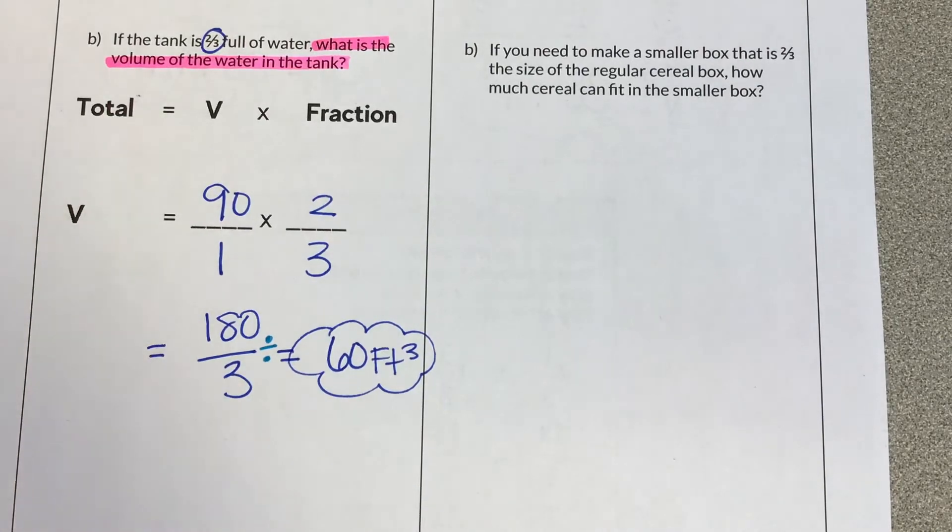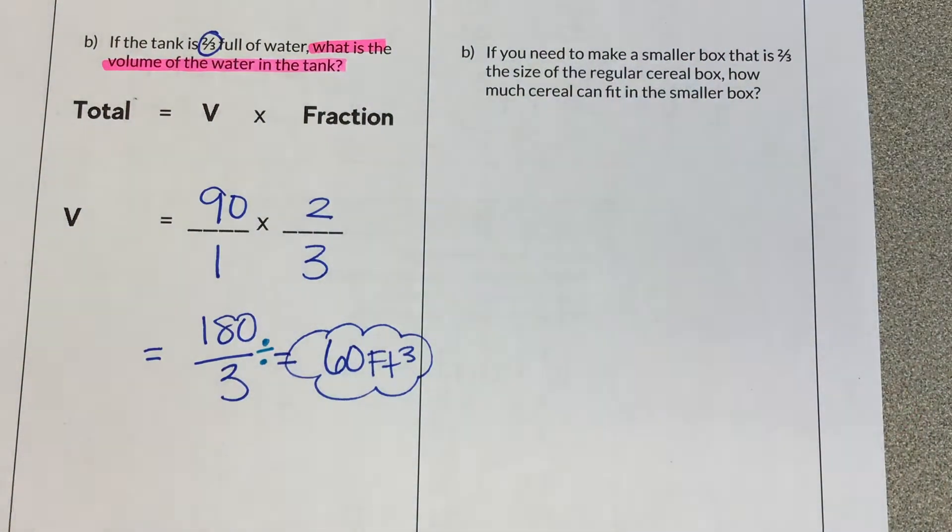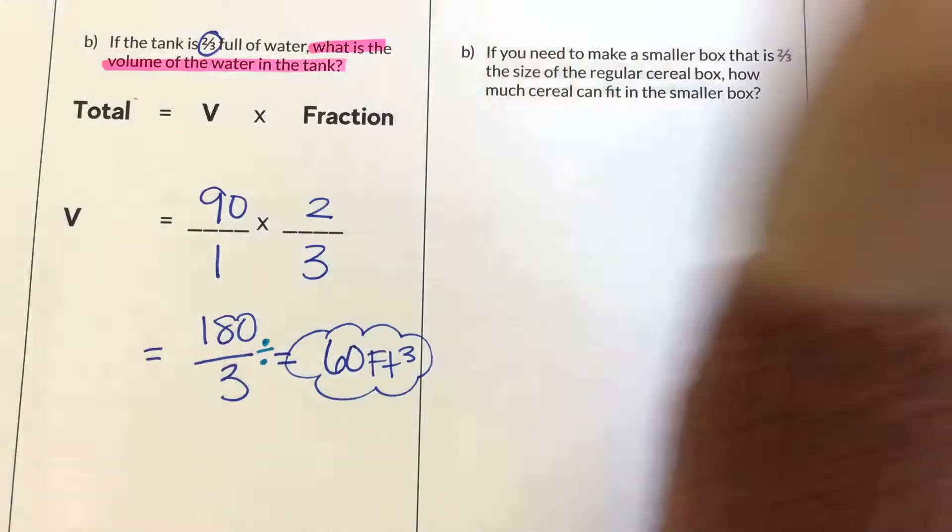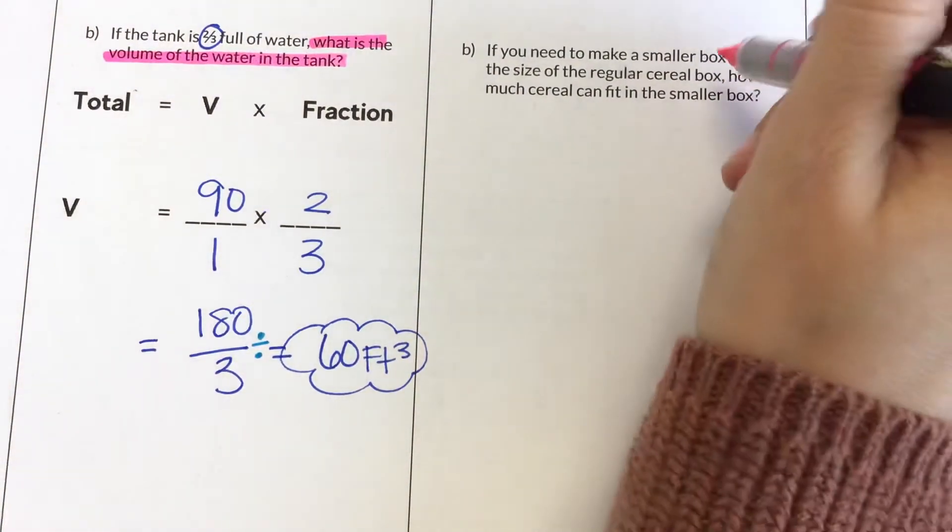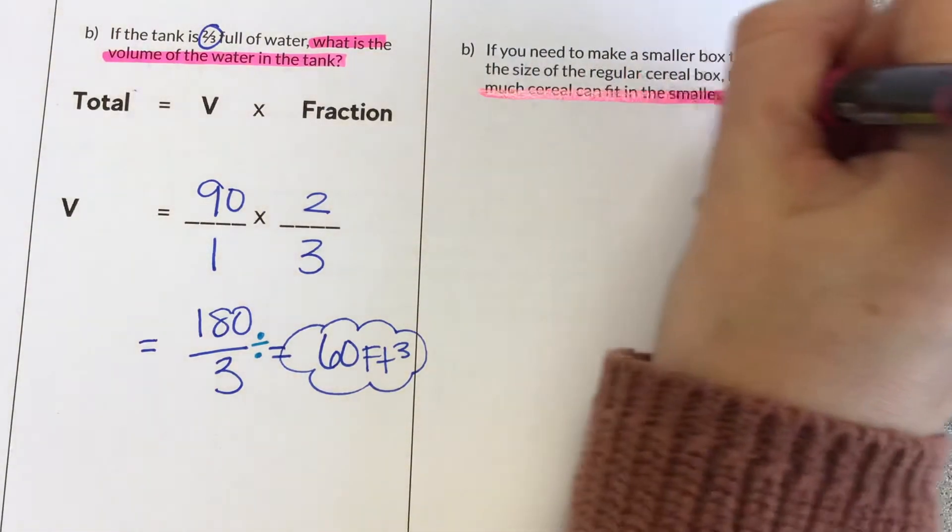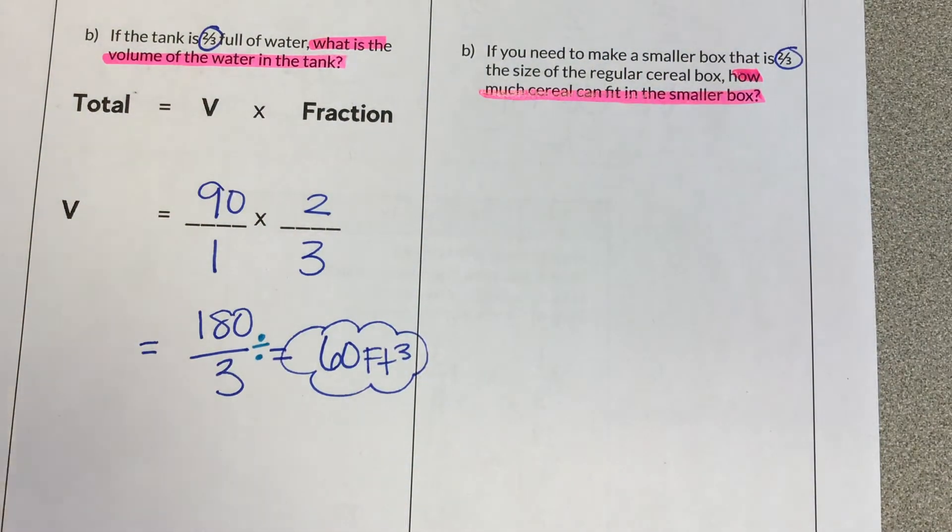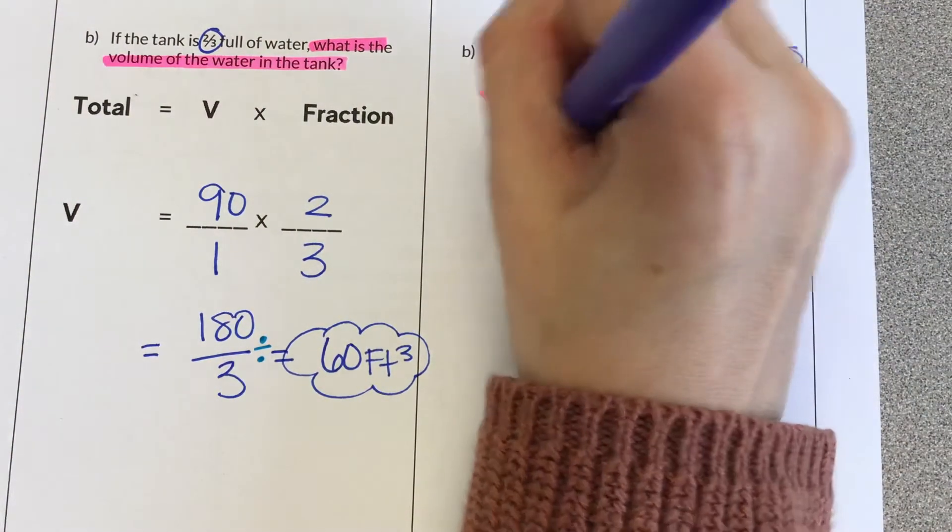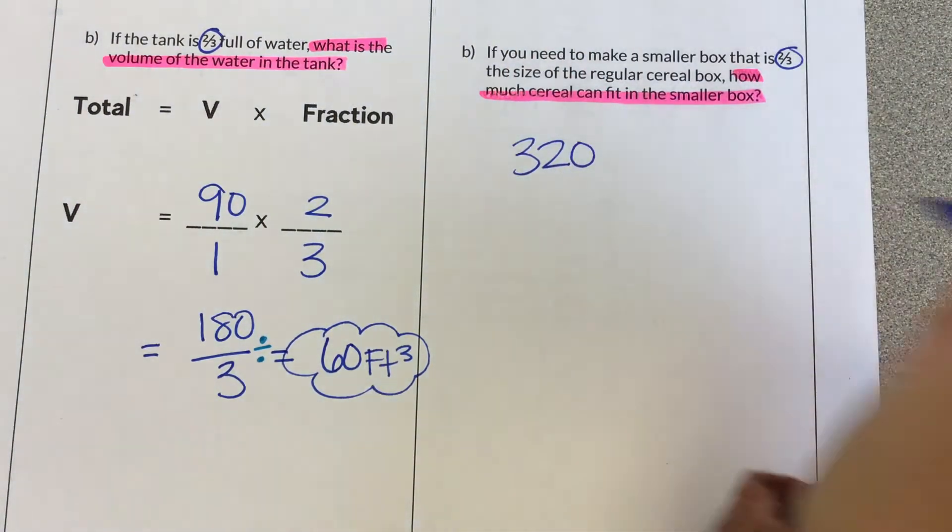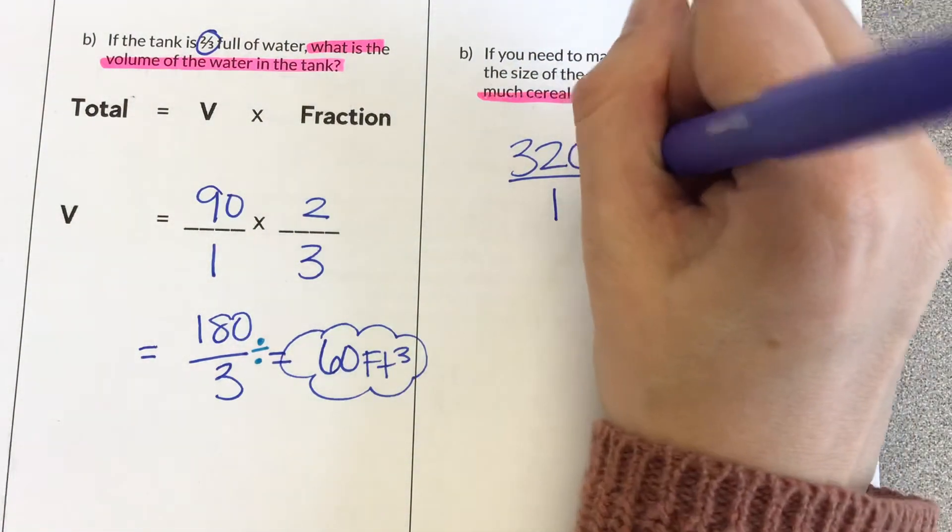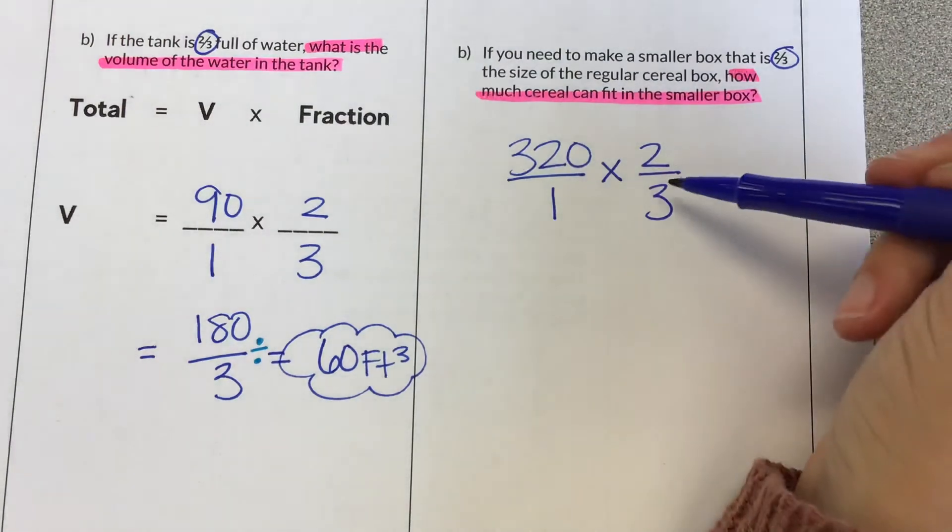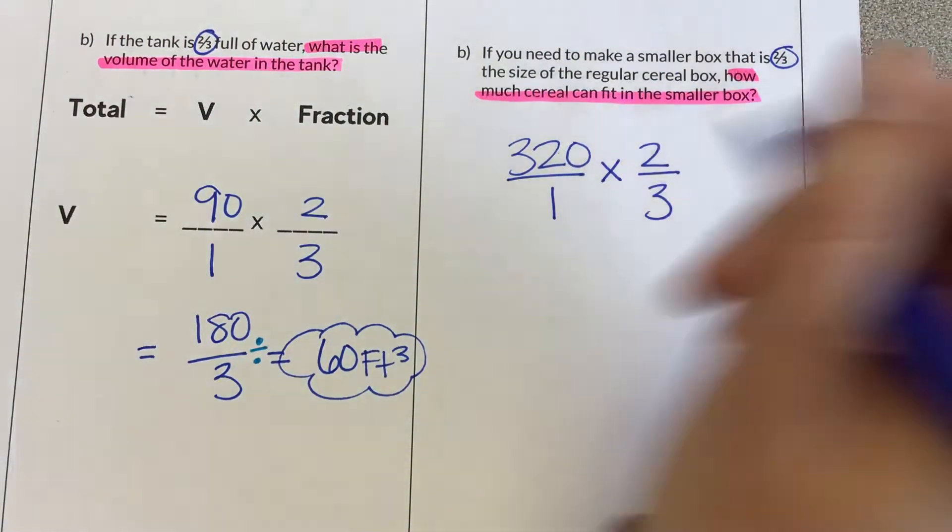We're going to use that volume for this next part. If you need to make a smaller box, so we're going to know our answer is smaller. That is two-thirds the size of the regular cereal box. How much cereal can fit in the smaller box? So we want to know what would two-thirds of that original amount be. So we're taking our original volume, 320, writing that as a fraction by writing it over 1, and multiplying it by two-thirds to see what is two-thirds of that original value.